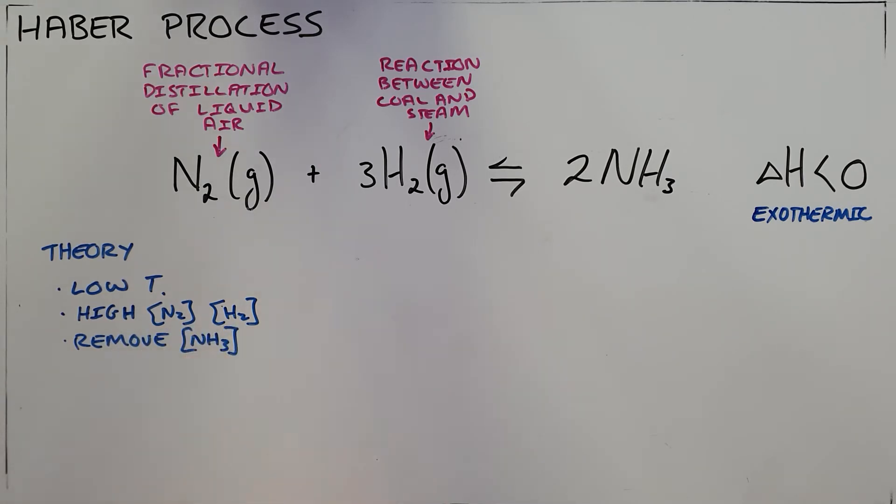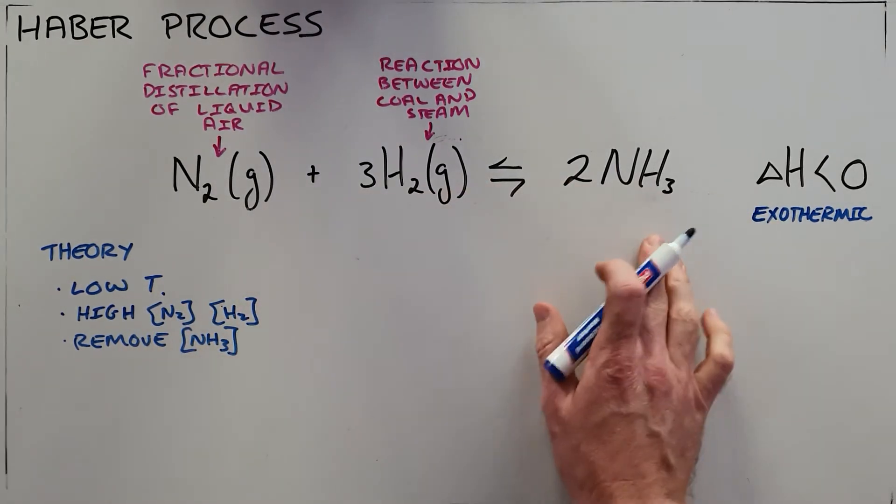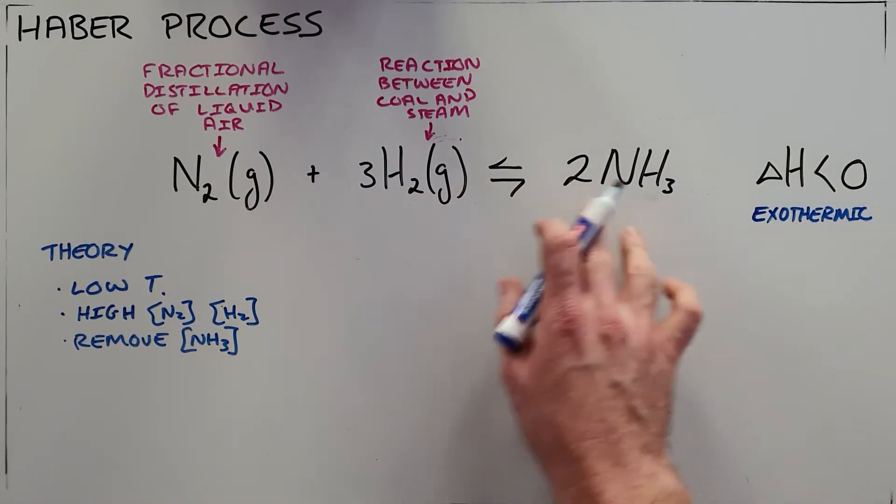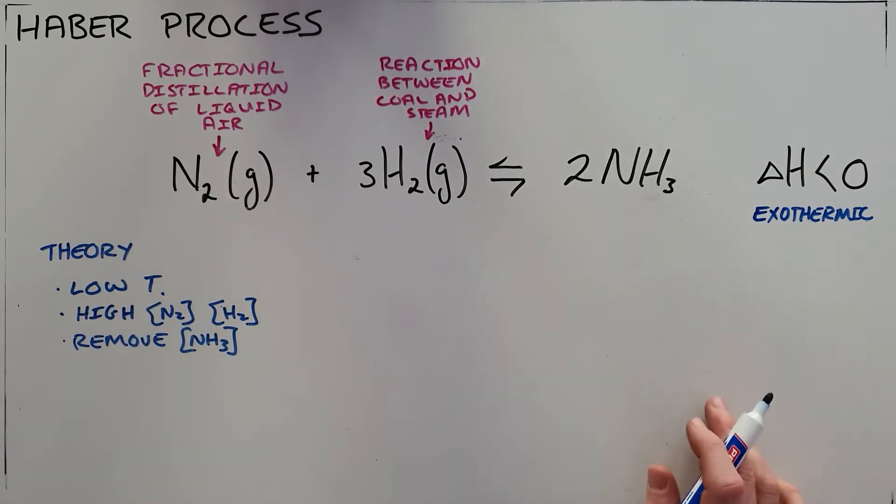That way we are constantly requiring this reaction to favor the forward to produce more ammonia and try to undo that high concentration that we have added.